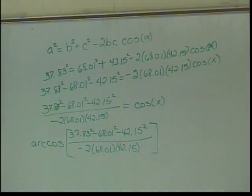37.83 squared times 68.01 squared minus 42.15 squared, divided by negative 2 times 68.01 times 42.15, and take the inverse cosine of that number. And it turns out to be 49.885 or so degrees. Just wanted to make sure you saw one of those before you had to start doing them on your homework.